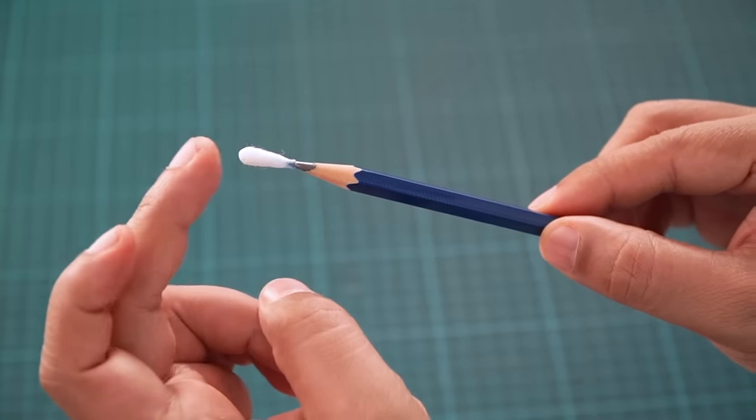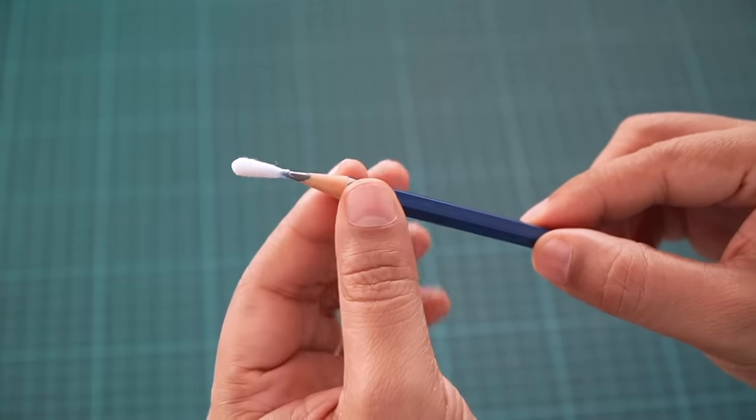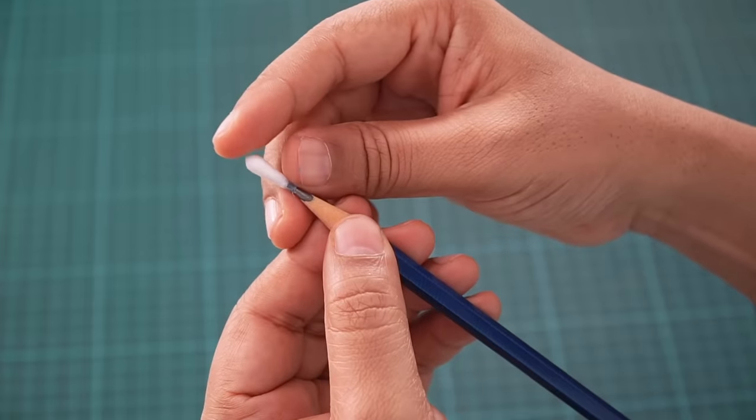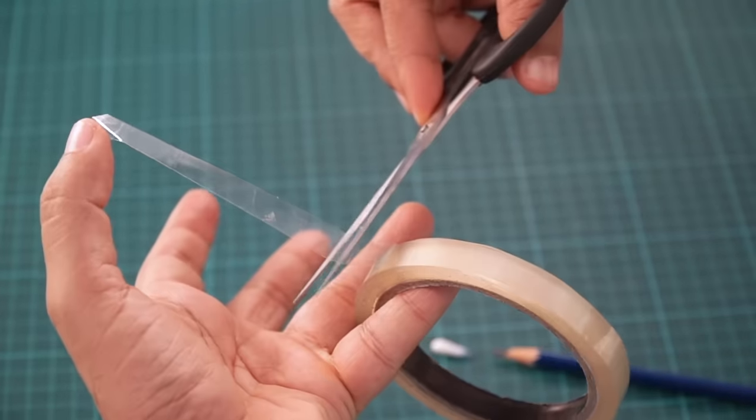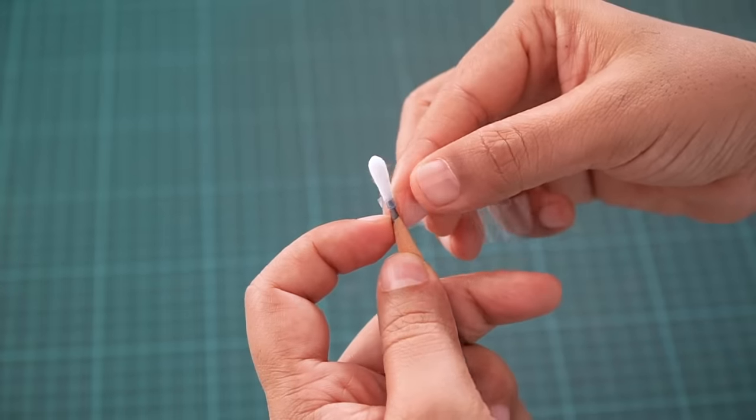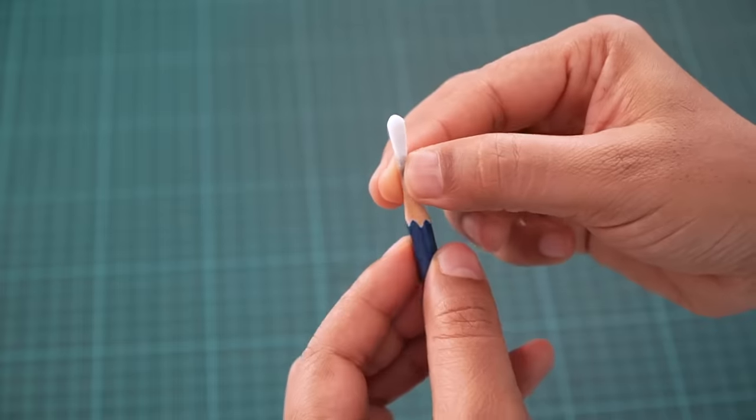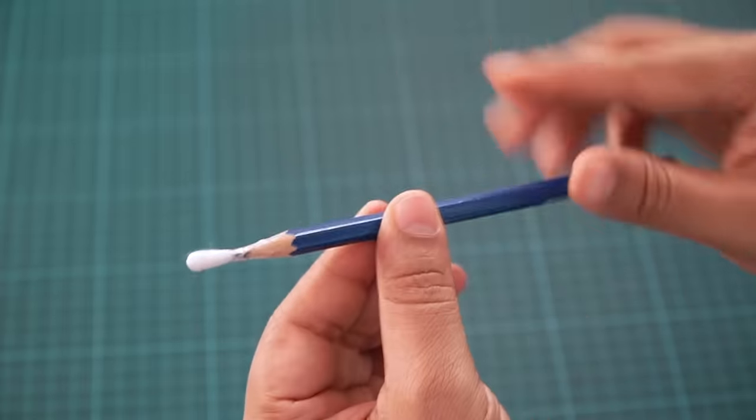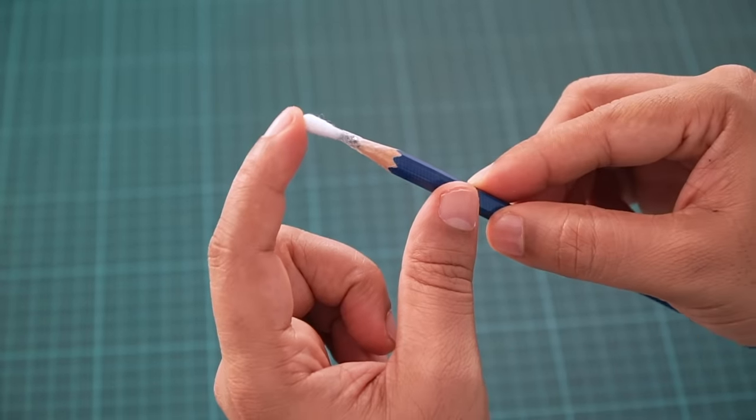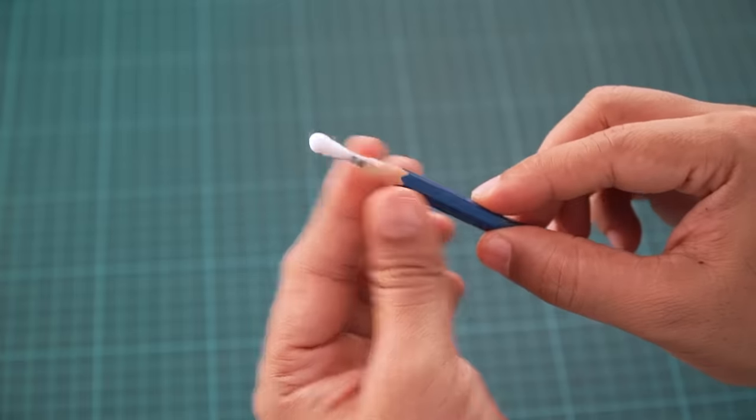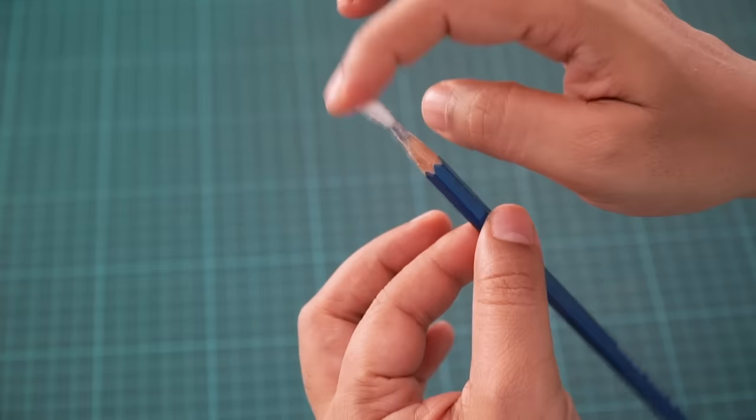Now you can see this won't stay here. It's a little wobbly. So for that, we will use some sticky tape and we will stick this in place. Okay. Nice and steady. So there you go. We have secured this in place.